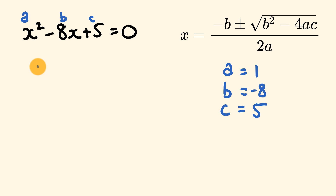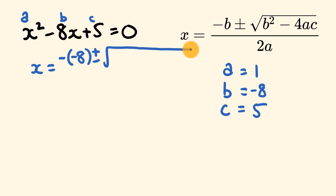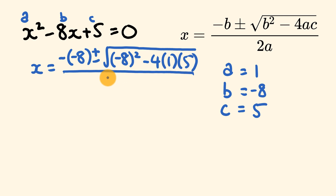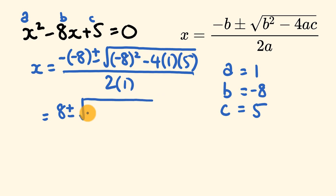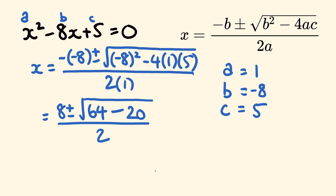So we put these into the quadratic formula: x is equal to negative b — negative negative 8 — plus or minus the square root of b squared, which is negative 8 squared, minus 4 times a (which is 1) times c (which is 5). All of that goes over 2 times a, so 2 times 1. This equals: negative negative 8 is 8, plus or minus the square root of negative 8 squared — negative 8 times negative 8 is 64 — minus 4 times 1, which is 4 times 5, which is 20. And all that goes over 2.